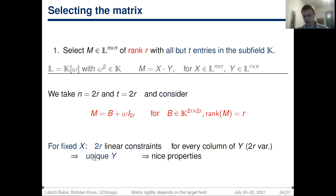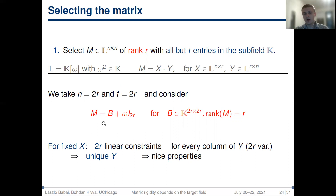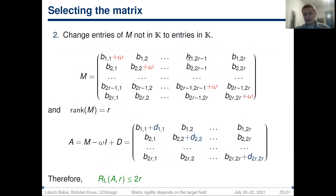For a matrix M of such form, since it has rank r, it can be written as X·Y, and for fixed X, the diagonal pattern of off-field entries imposes 2r linear constraints on every column of Y, which has 2r variables in K. For almost all matrices X, the system is non-degenerate and there is a unique solution for Y. This means the set of all such matrices satisfies nice properties — in particular, there is no algebraic dependence between entries of the first 2r columns of M, while all other entries algebraically depend on those columns, and this holds for any subset of r columns. On the construction step, we take this matrix and change the diagonal entries not in K to arbitrary entries in K, always yielding a matrix A with rigidity at most 2r.